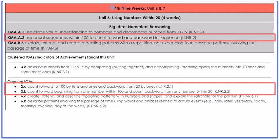The final AKS in Unit 6 is AKS 2, also an ongoing AKS worked on all year. AKS 2 consists of students rote counting forward to 100 by 1s, starting at 10 and counting forward by 10s to 100, and rote counting backwards from 20. Students also count forward within 100 and backwards within 20 from any given number. At this point in the year, all parts of this AKS have been introduced, so in Unit 6, students will continue to work towards mastery.